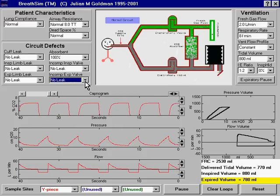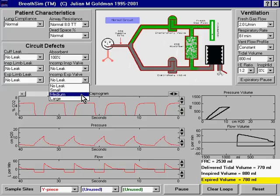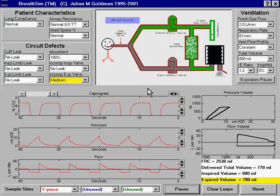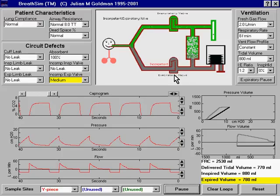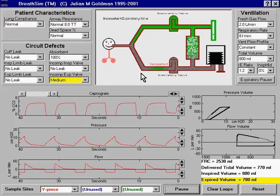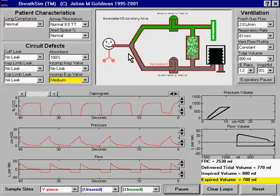So when the expiratory valve is incompetent, previously exhaled gas that fills the ventilator bellows is now able to be pushed backward down the expiratory limb and be rebreathed at the Y piece.